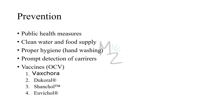Prevention is achieved mainly by public health measures ensuring a clean water and food supply. Proper hygiene — including hand washing — can prevent cholera. Prompt detection of carriers is important in limiting outbreaks. Vaccines include OCV (oral cholera vaccine), an oral live attenuated vaccine called Vaxchora, and other vaccines like Dukoral, Shanchol and Euvichol.